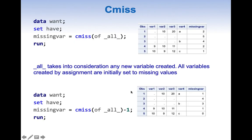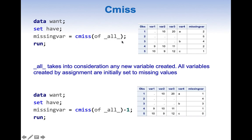Now let us look at CMISS. CMISS is a very important function and can be applied on all variables irrespective of data types. CMISS finds the number of missing values in a row, and when we use OF _ALL_, it finds the total missing values in a row.